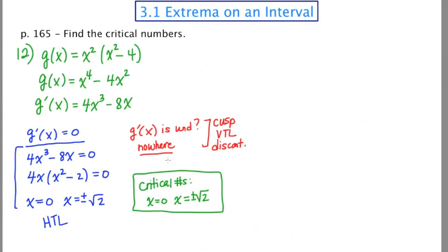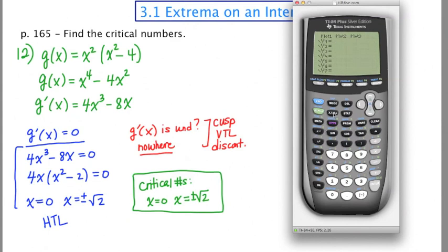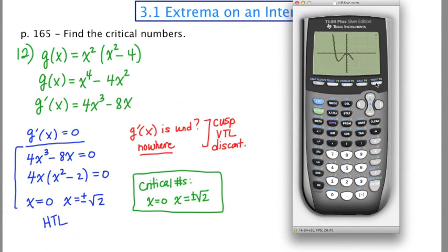I'd like to draw the graph of this original function and show you that at 0 and at ±√2 there will be horizontal tangent lines. I'm going to enter y = x² times (x² - 4), make it bold so it shows up on the video, and tweak the window to go from -5 to 5. This is a polynomial with even positive end behavior. The three horizontal tangent locations are at -√2, +√2, and 0, confirming our manual work.